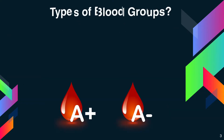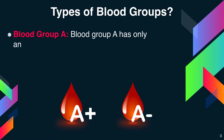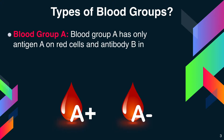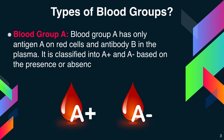What are the types of blood groups? Blood group A has only antigen A on its red cells and B antibody in the plasma. It is classified into A positive, based on the presence of Rh antigen, and A negative, based on the absence of Rh factor.